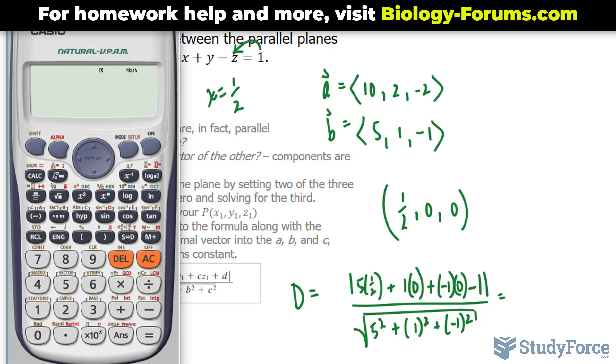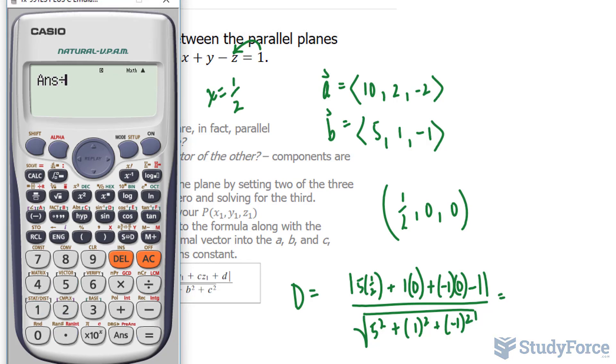And we'll use our calculator. 5 times half is 2.5 minus 1 divided by the bottom, which is the square root of 25 plus 1 plus 1. And we end up with the square root of 3 over 6, which is approximately 0.2886.